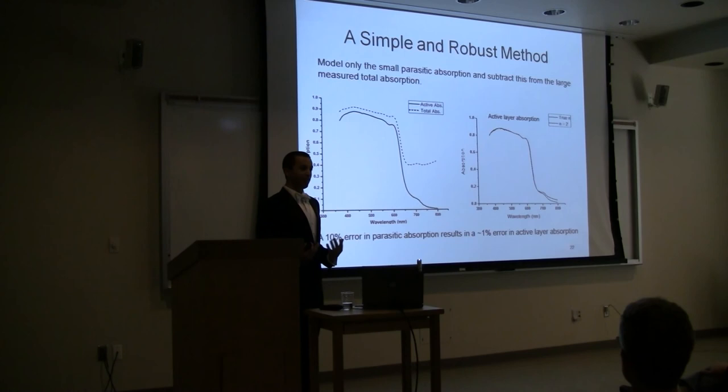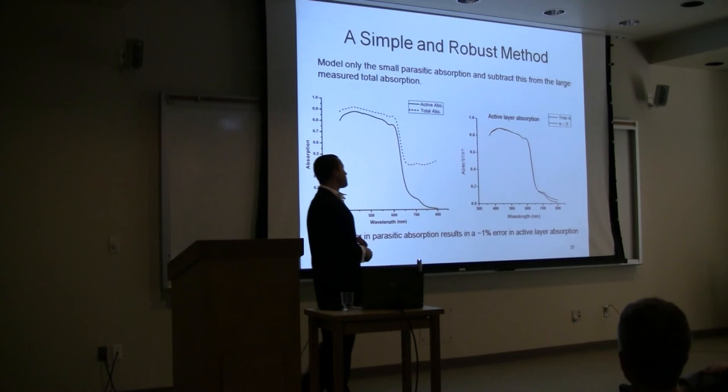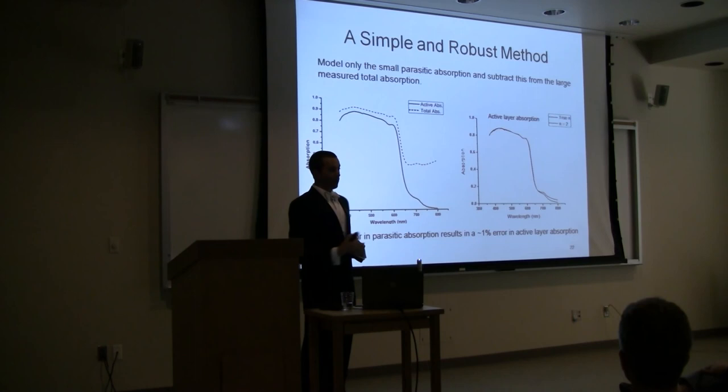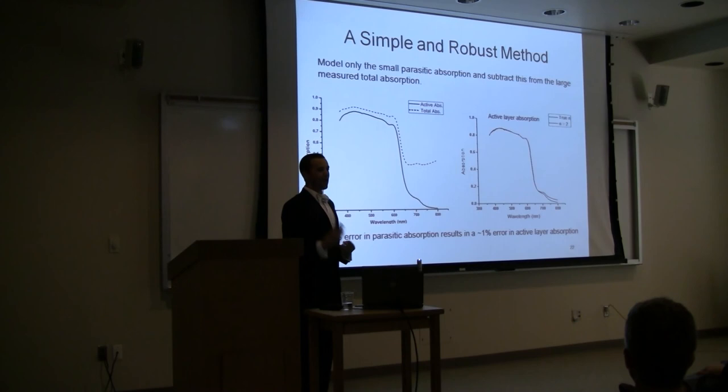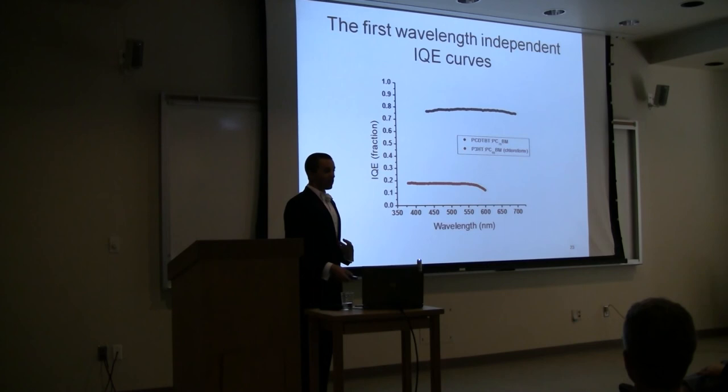As a demonstration of the robustness of this method, I've made two plots here on the right, showing what we would use if we used the method to calculate the active layer absorption using the true optical constants of the material in the transfer matrix model to calculate those parasitic absorptions, and also just setting them all equal to n equals 2. You can see that because most of the data is coming from the experimentally measured total absorption, it's very insensitive to errors in those optical constants, which are the things that are both hard to measure and also vary with depth in these films. So this robustness allows for a lot more error in the measurement without affecting the result.